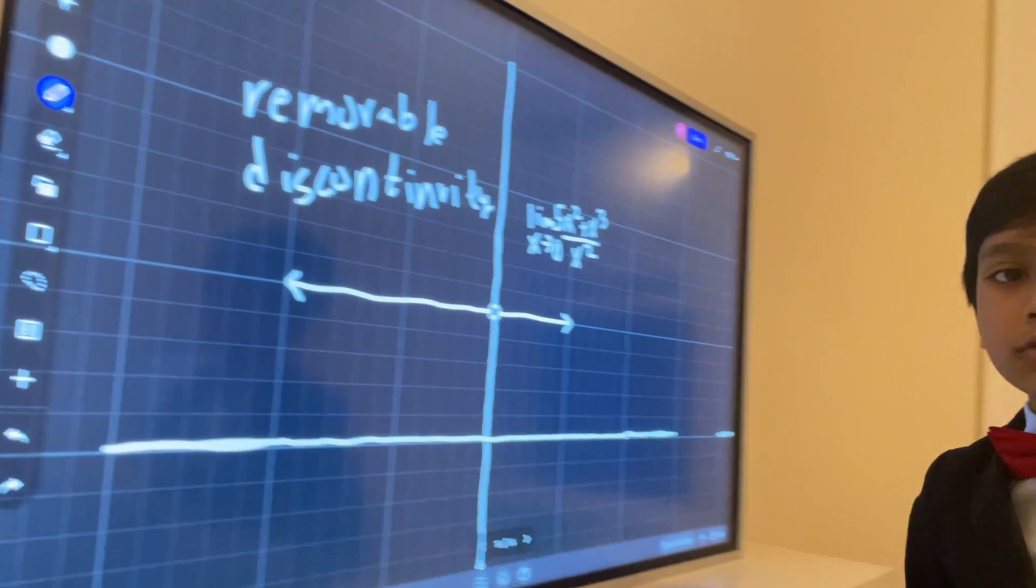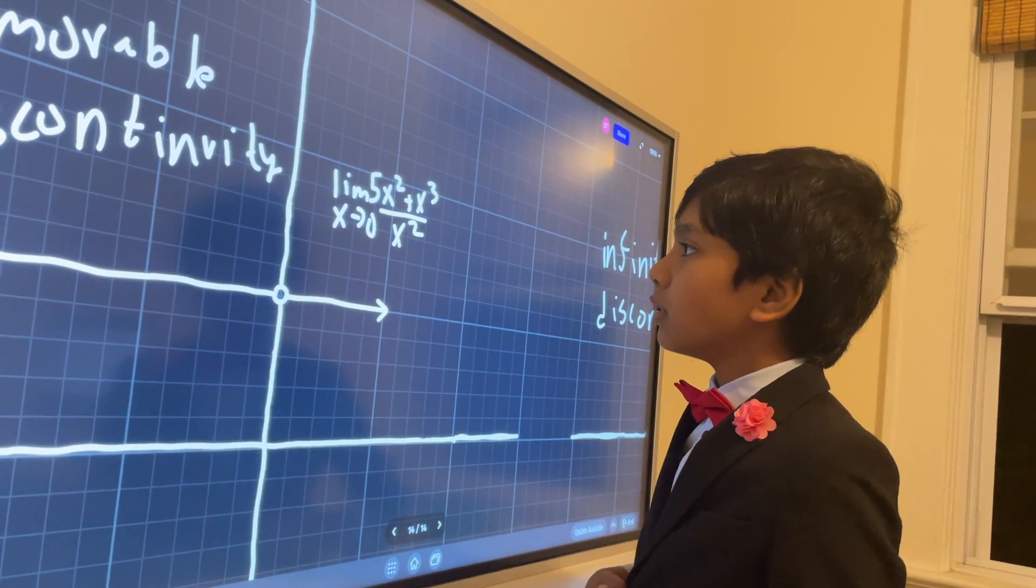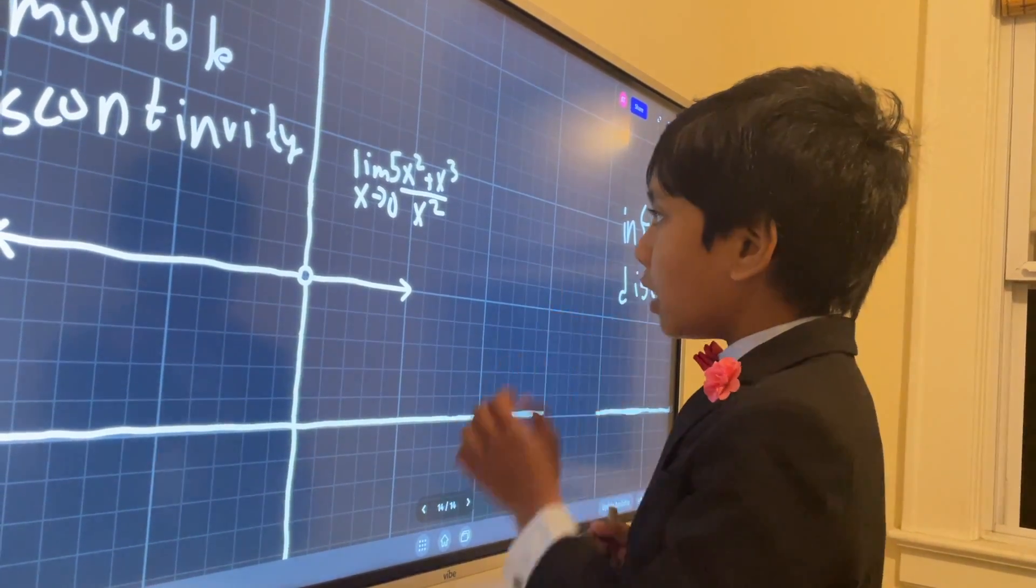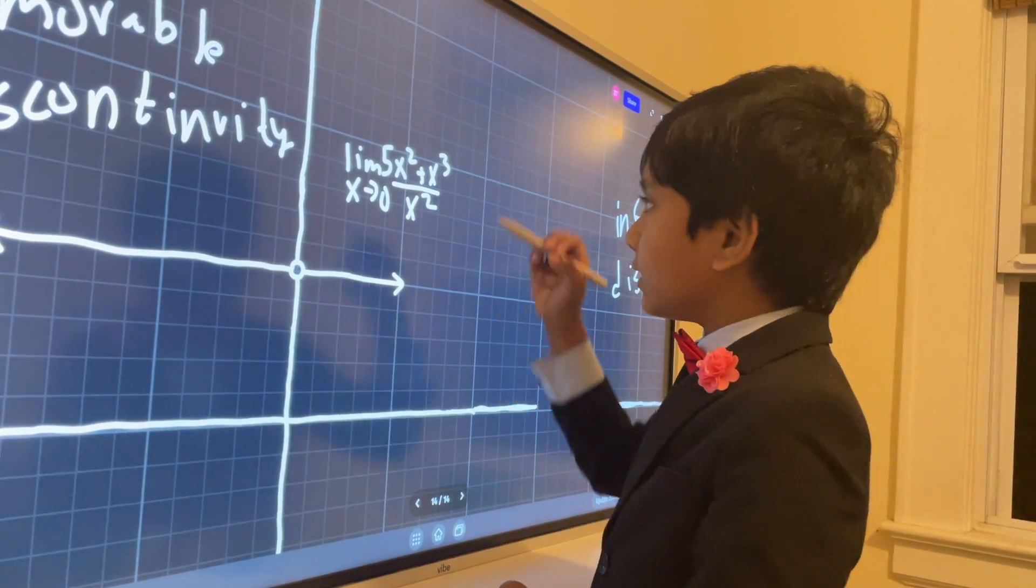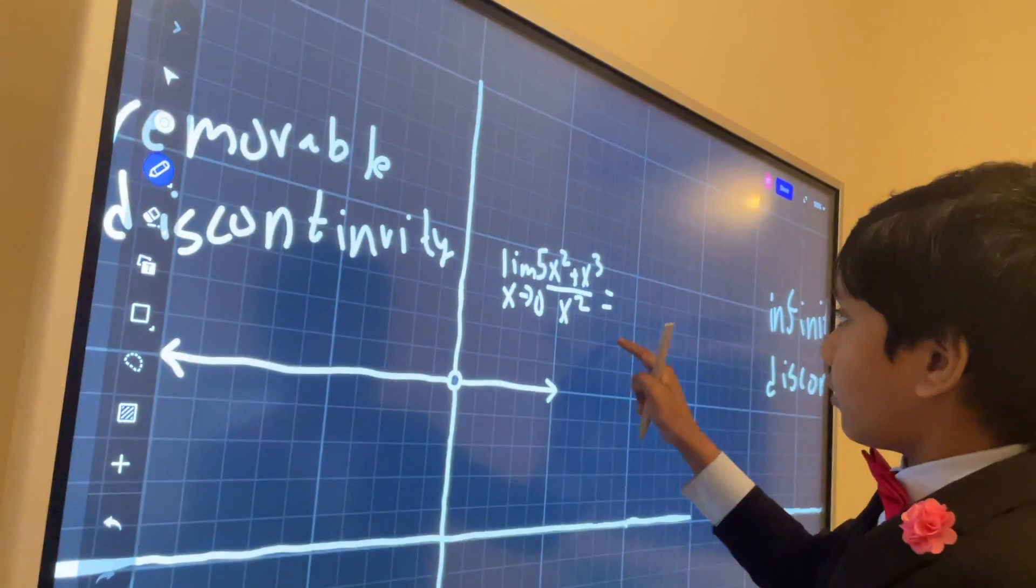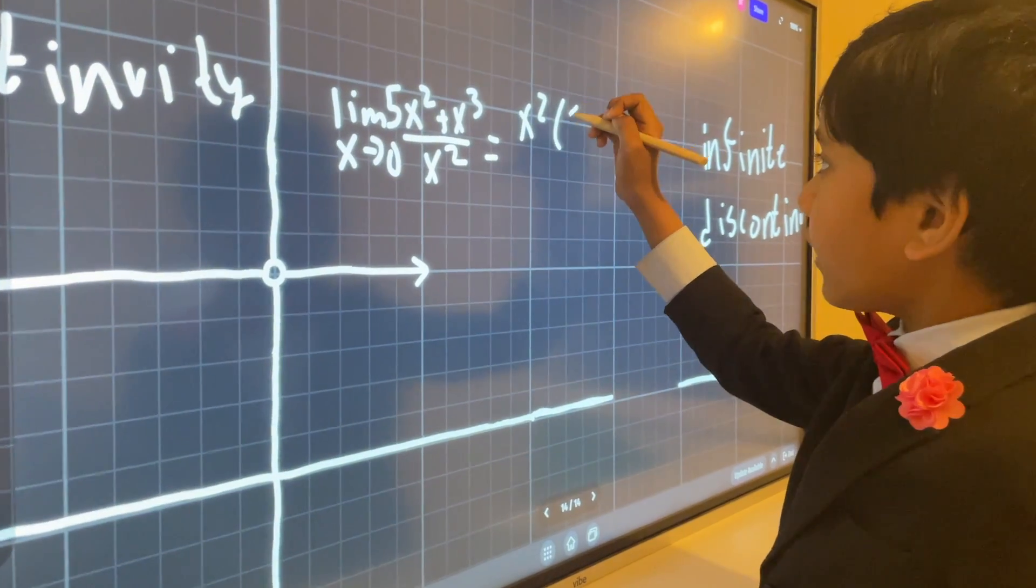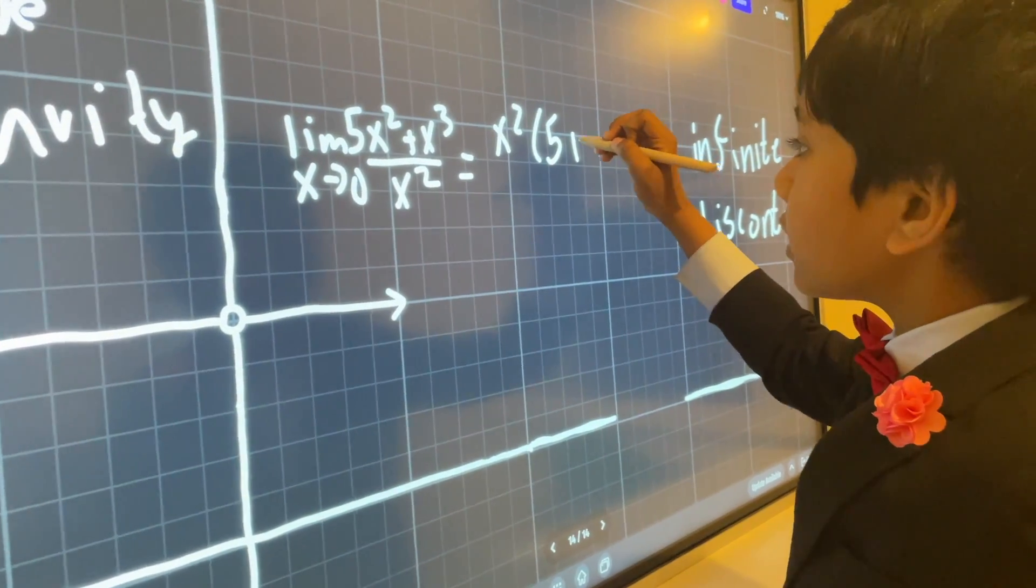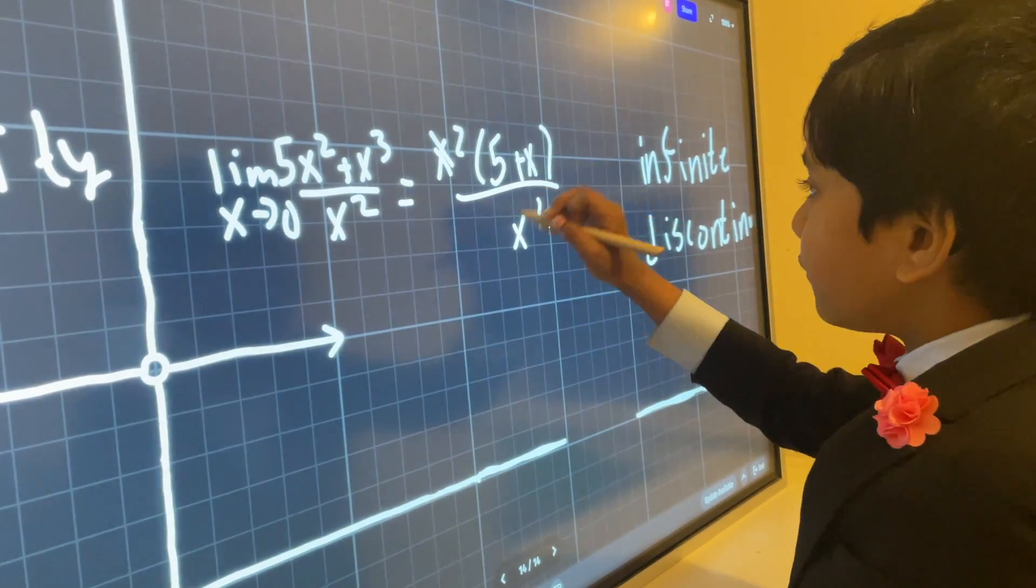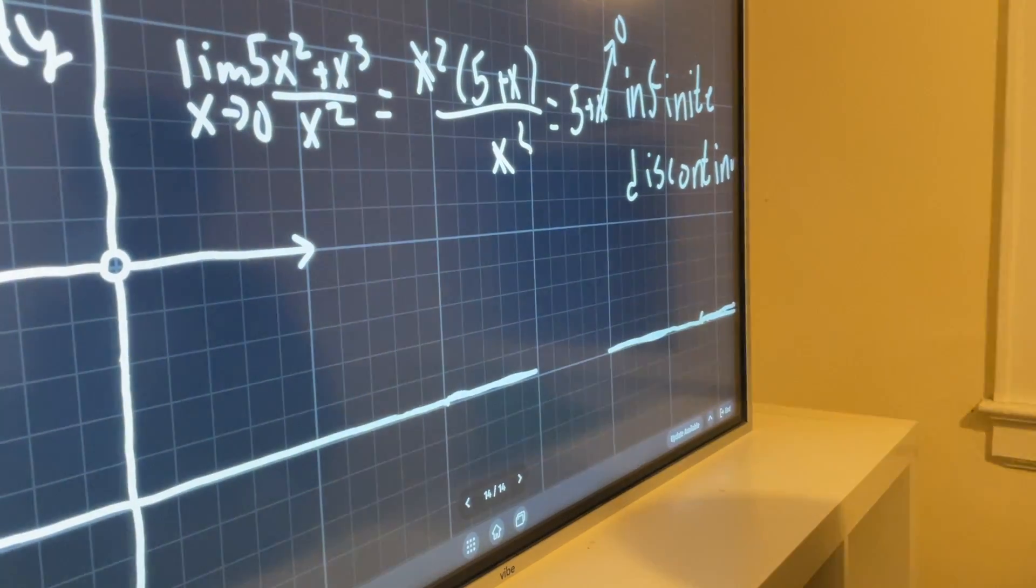There's also the removable discontinuity where you can remove the discontinuity. For example, the limit as x approaches zero: when x is zero then this all goes to waste because of the denominator. But when x goes to zero we can also do this. We can factor out x squared and then we just get five. We just get five.